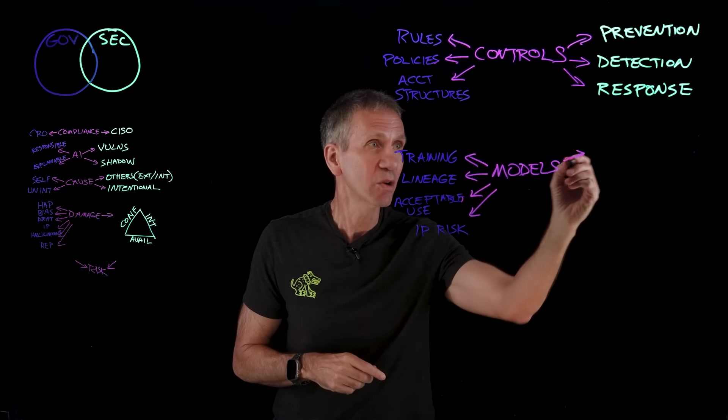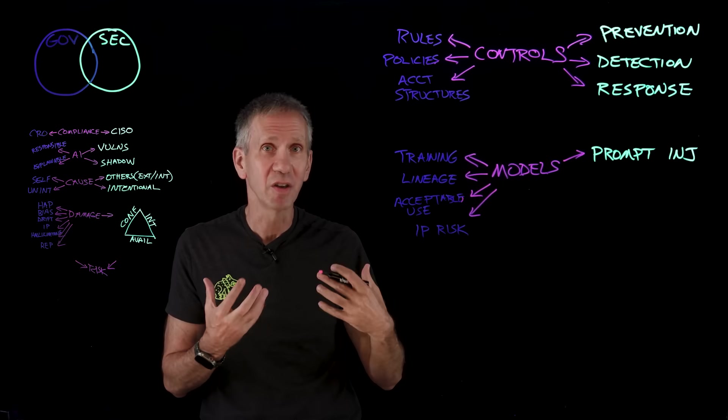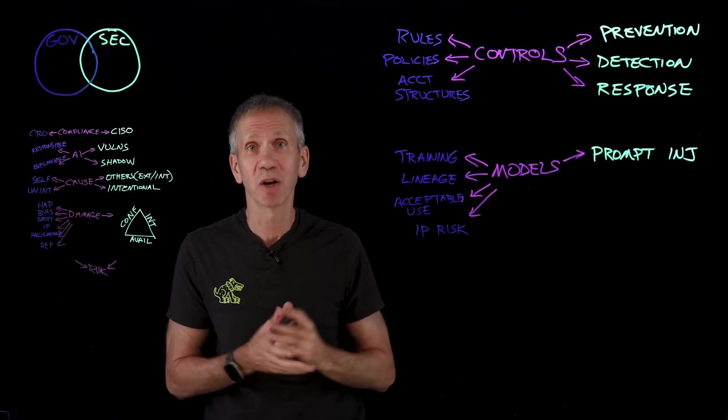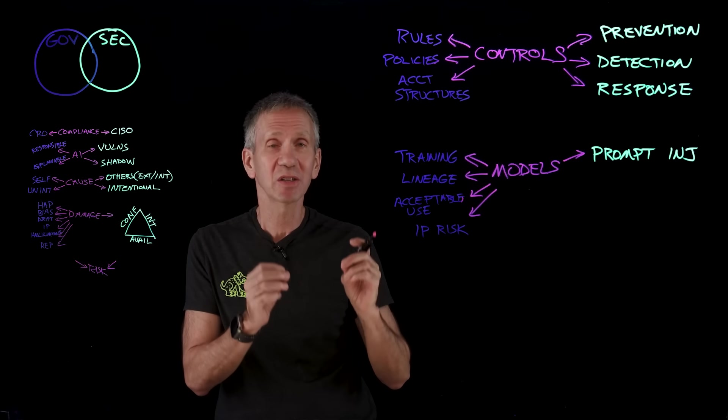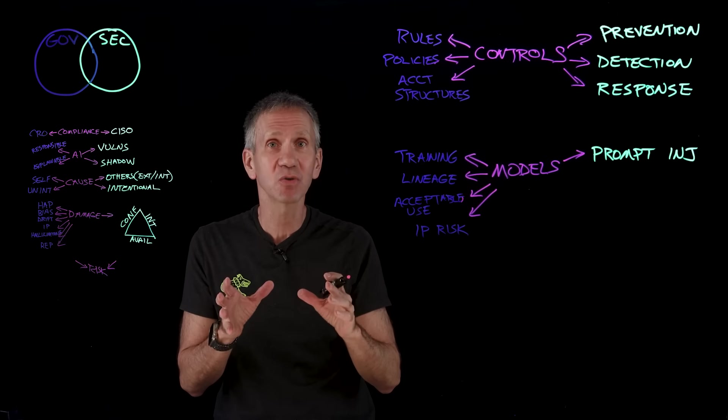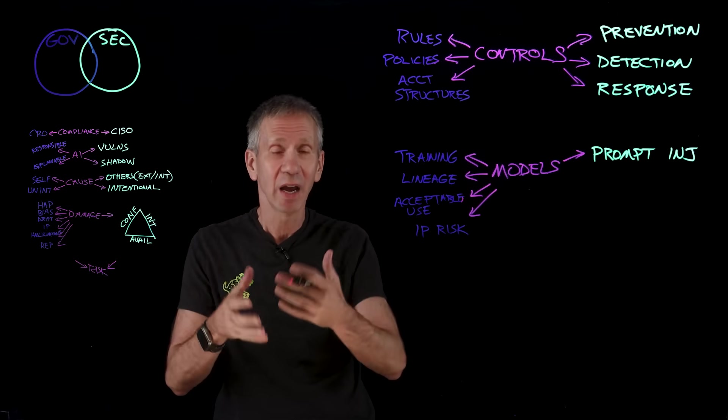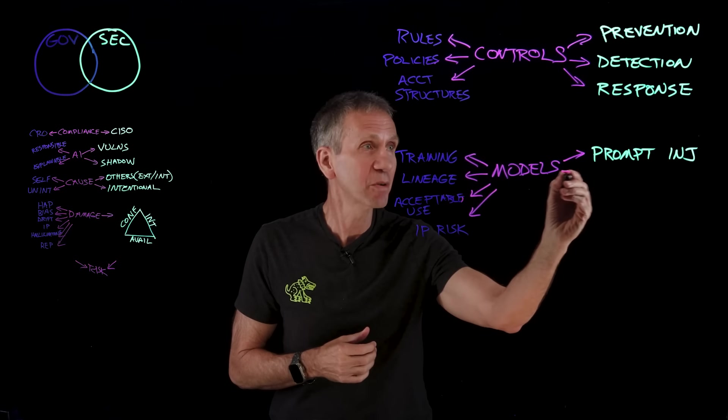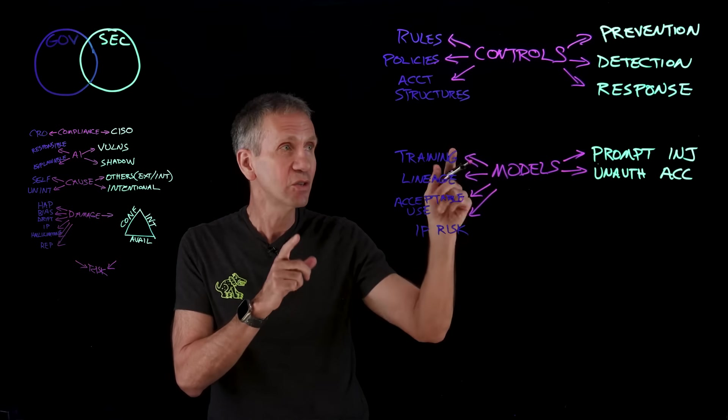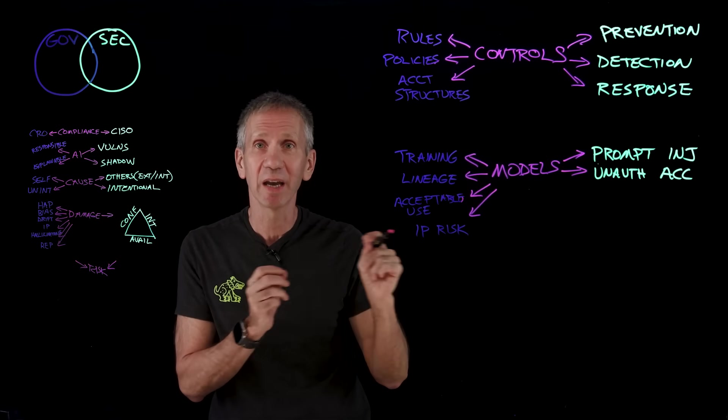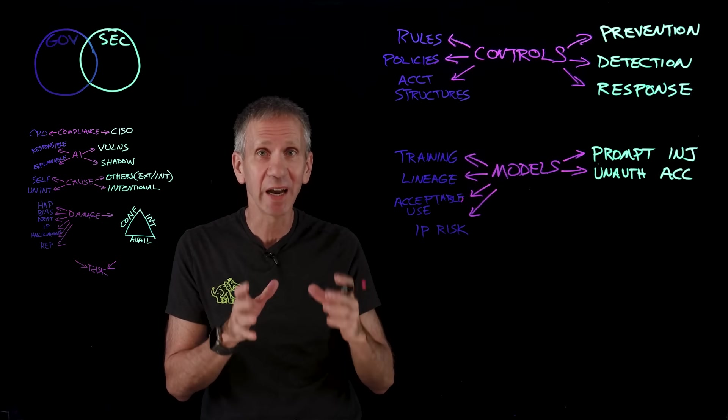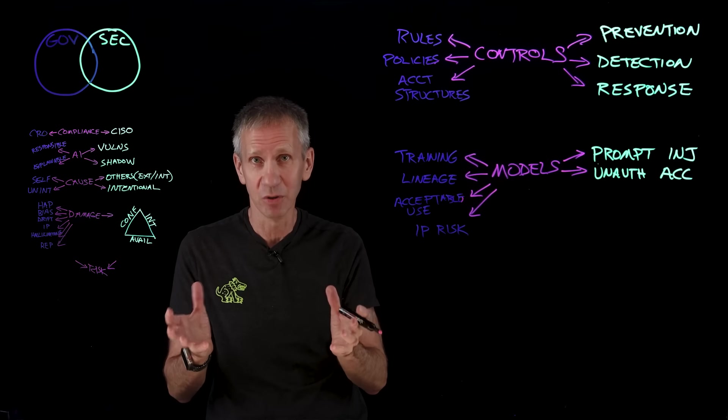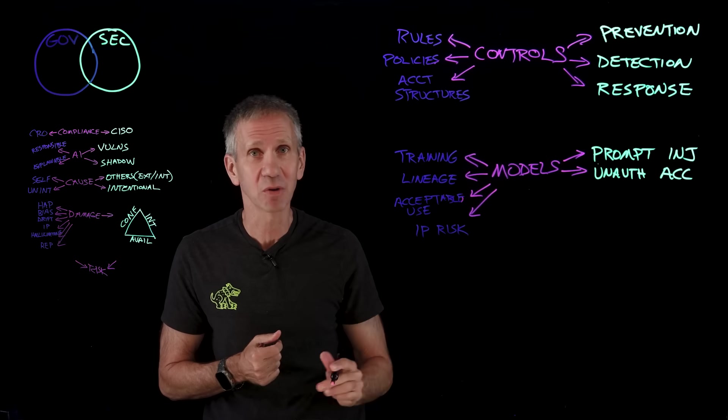On the security side, we're thinking about an attacker, something other than us that is coming in. What is the number one attack type that we're concerned with, especially with generative AI? It's prompt injections. These are things where people are basically socially engineering our AI, giving it instructions to override its original instructions, and then having it do something that we didn't intend it to do. I need to have protections against unauthorized access.